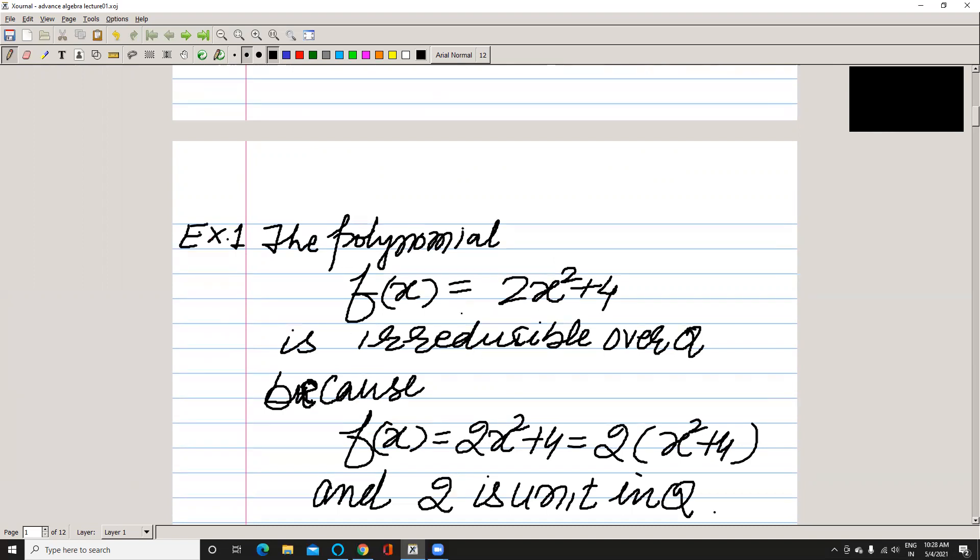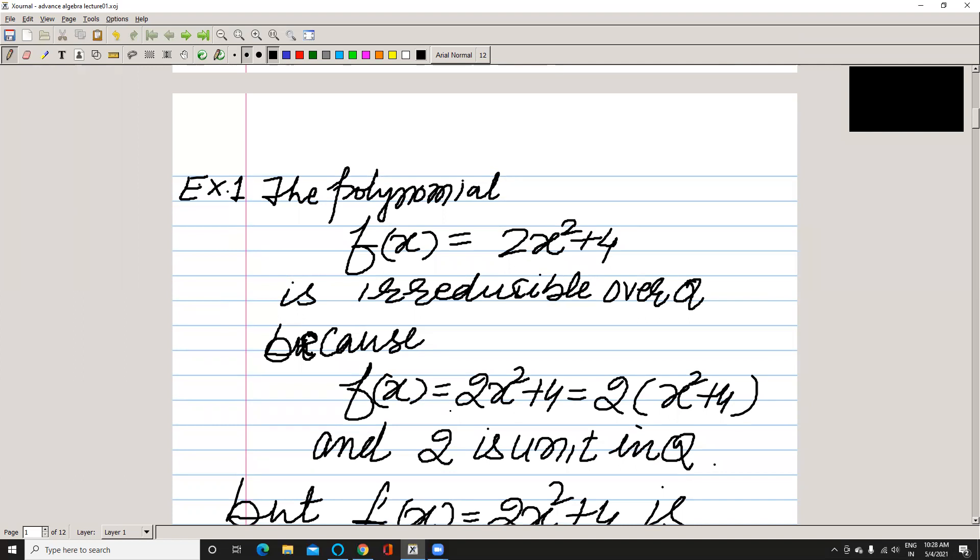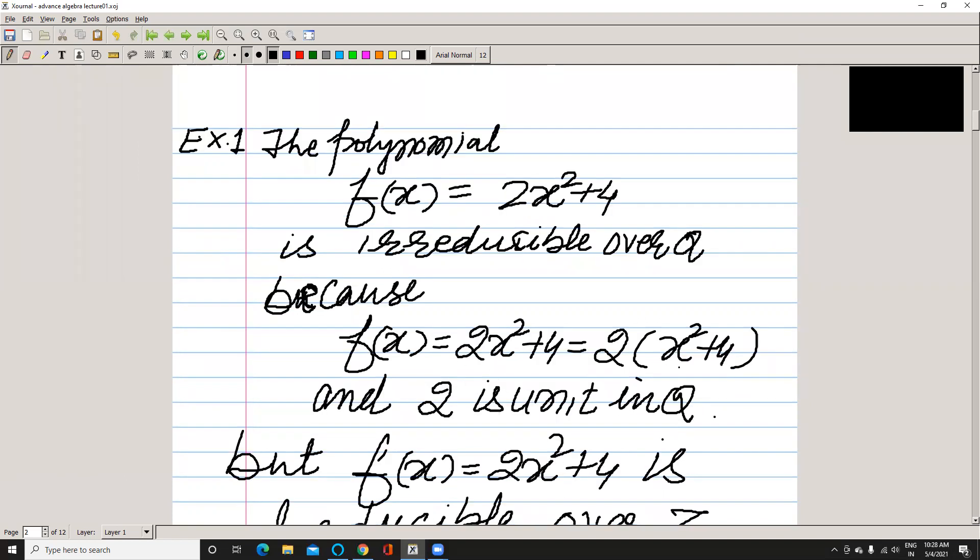Suppose we take the polynomial 2x² + 4. It is reducible over Q because f(x) can be expressed as 2(x² + 2). There is no other way to express it because we are working on rational numbers.